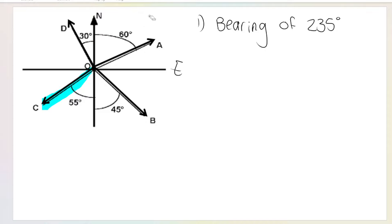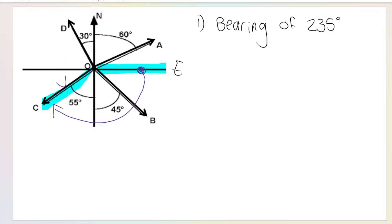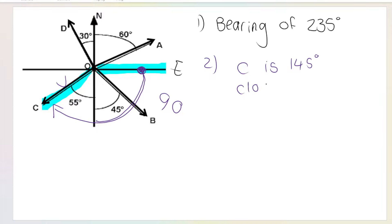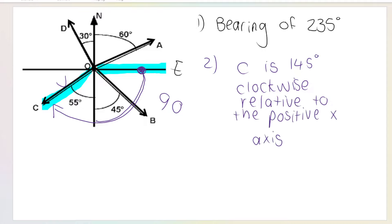For vector C relative to the positive x-axis: we start at the positive x-axis and go clockwise, because vector C is closer going that way. How much did I move clockwise? From here to here is 90, then I added 55. So 90 plus 55 is 145. Vector C is 145 degrees clockwise relative to the positive x-axis.